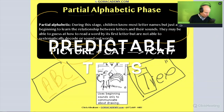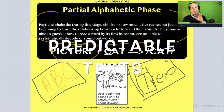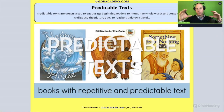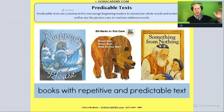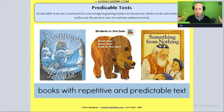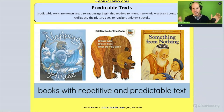A student at these two levels is just starting out, so they would be much more inclined to be working with a predictable text. Let's read this — it says: predictable texts are constructed to encourage beginner readers to memorize whole words and sentences, as well as picture cues, to read unknown words.